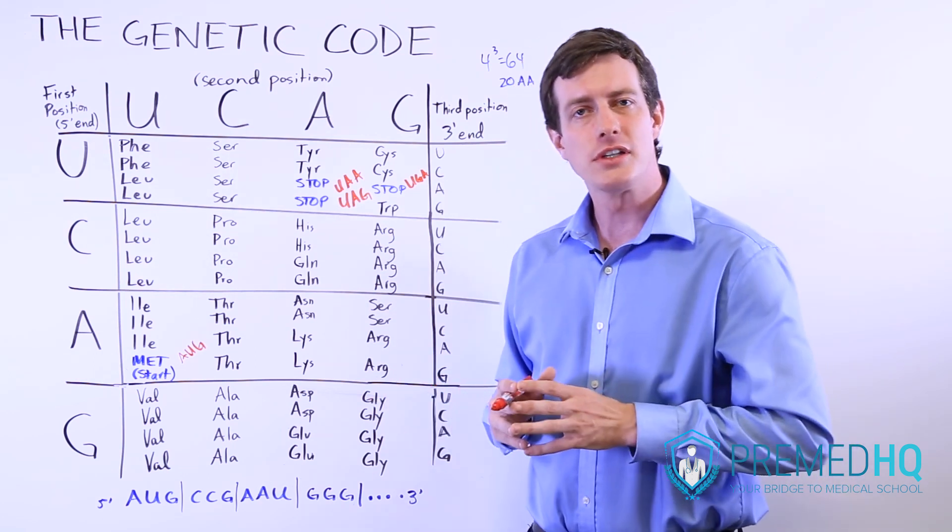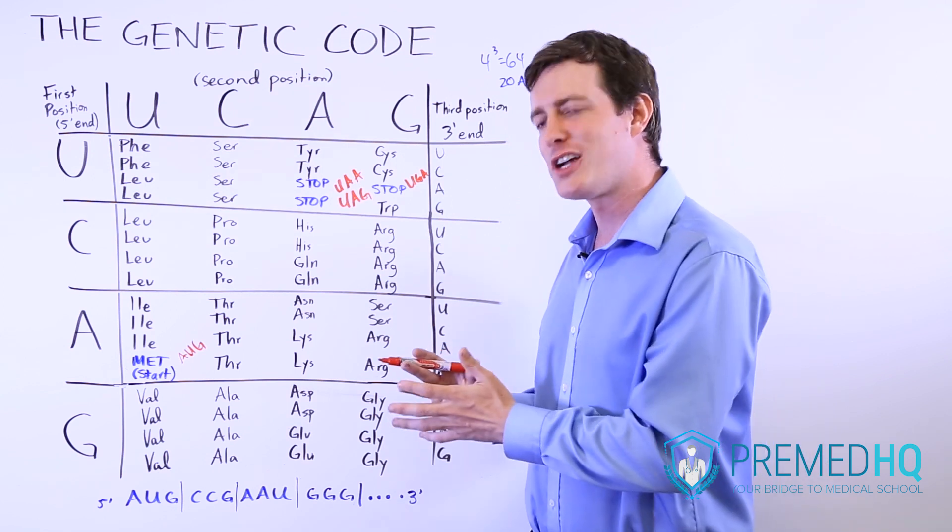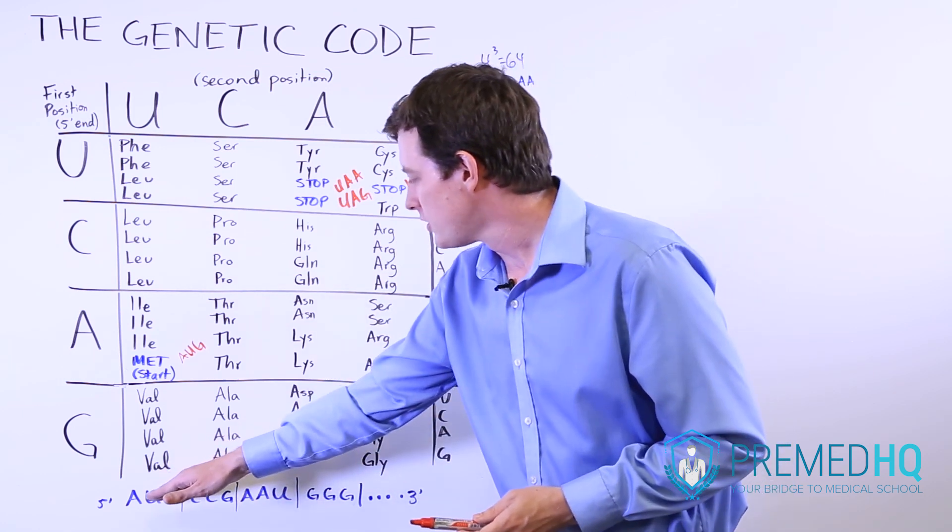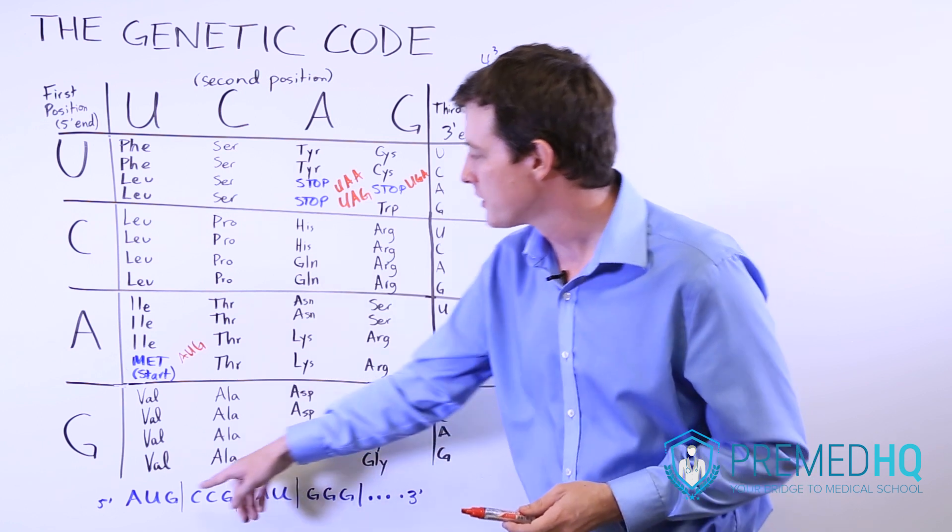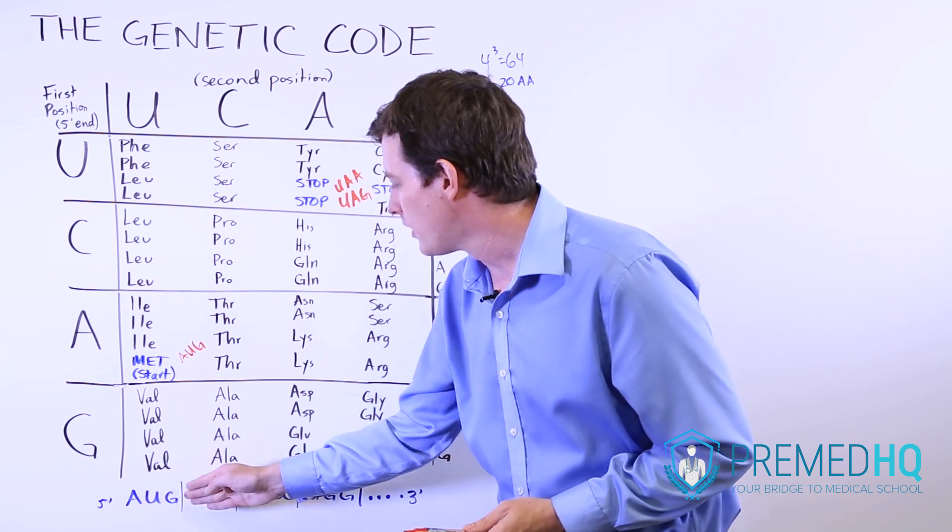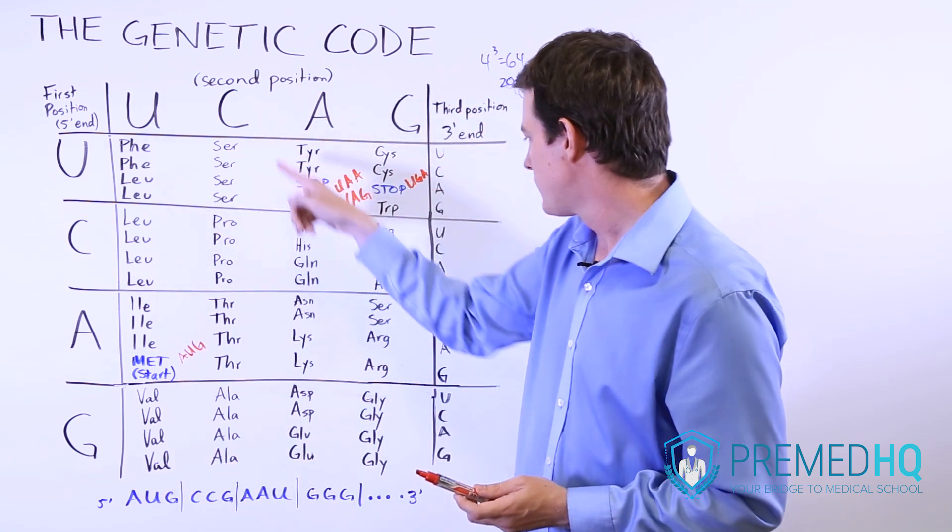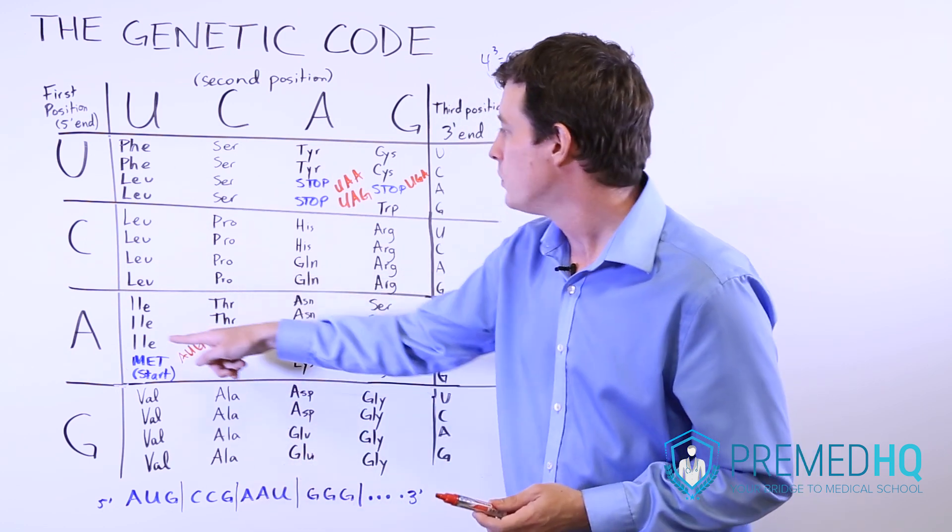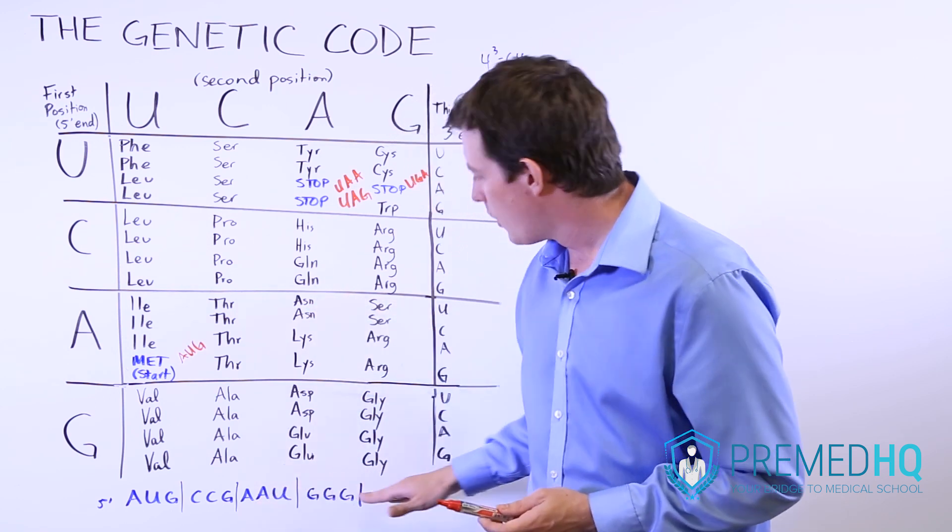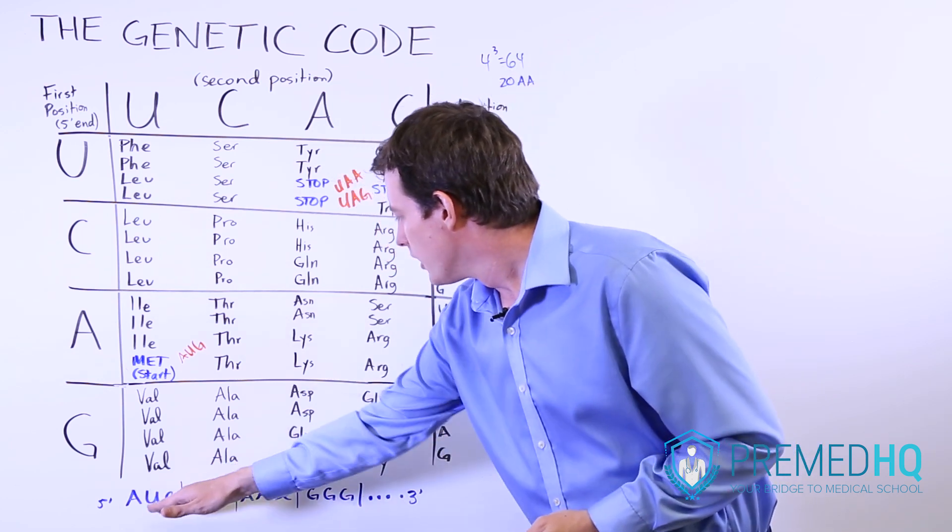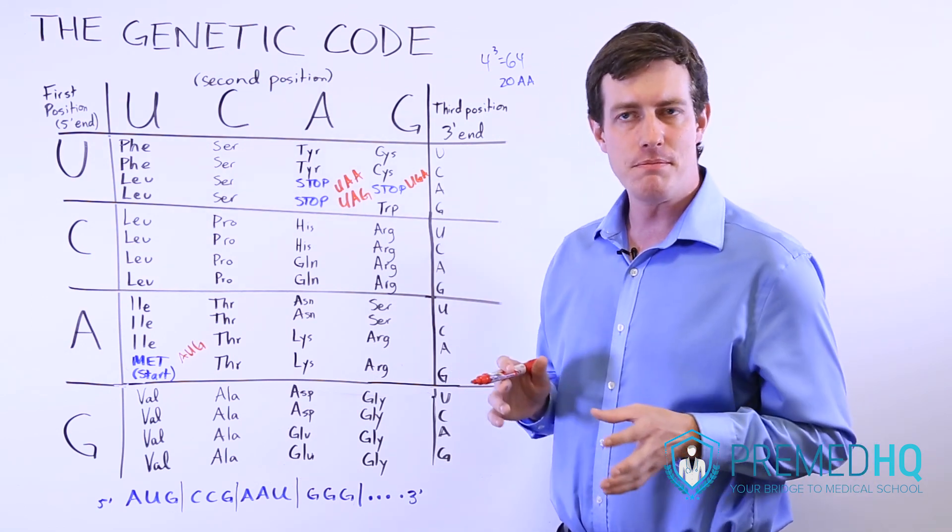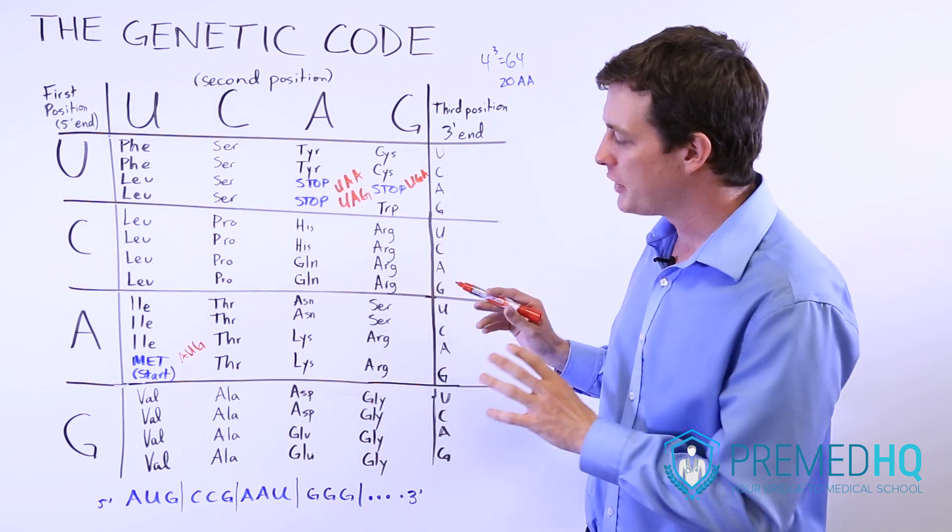The other type of mutation that you can encounter is called a frameshift mutation. And the reason they call it frameshift is because if we look down here, we have set up an example of a potential amino acid sequence that we can code. Notice that it always starts with AUG, the methionine start codon, AUG. And then the next codon is CCG, and so that encodes for CCG, proline. And then we have AAU, which is AAU, ASN, asparagine, and so on. And so we have these different codons that we're going to be producing. A frameshift involves adding or removing a base to this, and what it does is it throws off the reading frame for everything.